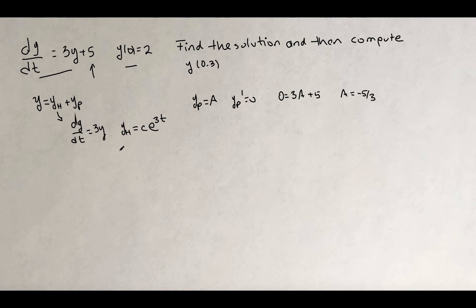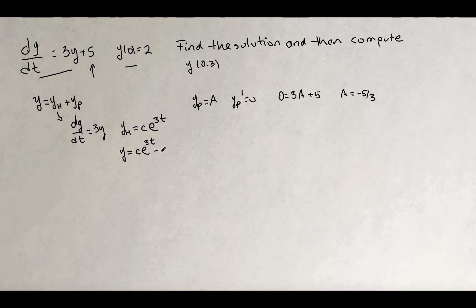Now we have the general solution. The general solution is the homogeneous part, c·e to the 3t, plus the particular solution, which is negative 5 thirds.